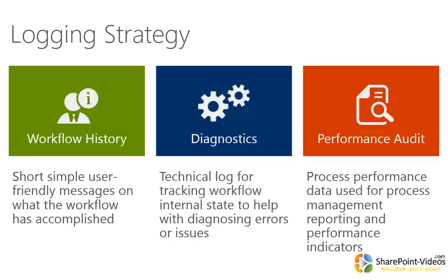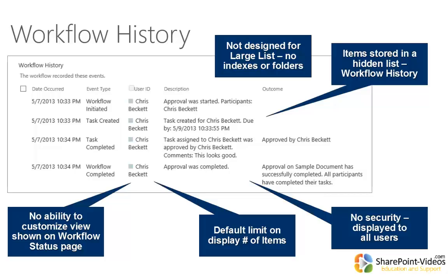Out of the box, SharePoint workflow gives us only one logging source: the workflow history. The workflow history is displayed on the overall workflow status for every running workflow, and users can look at this list of messages. Because it's the only one provided out of the box, workflow designers historically have tried to use it for everything — informing users of what's happening, logging diagnostic information, and logging performance information — even though you've got three different audiences for that information and you're trying to use one list for all three of them.